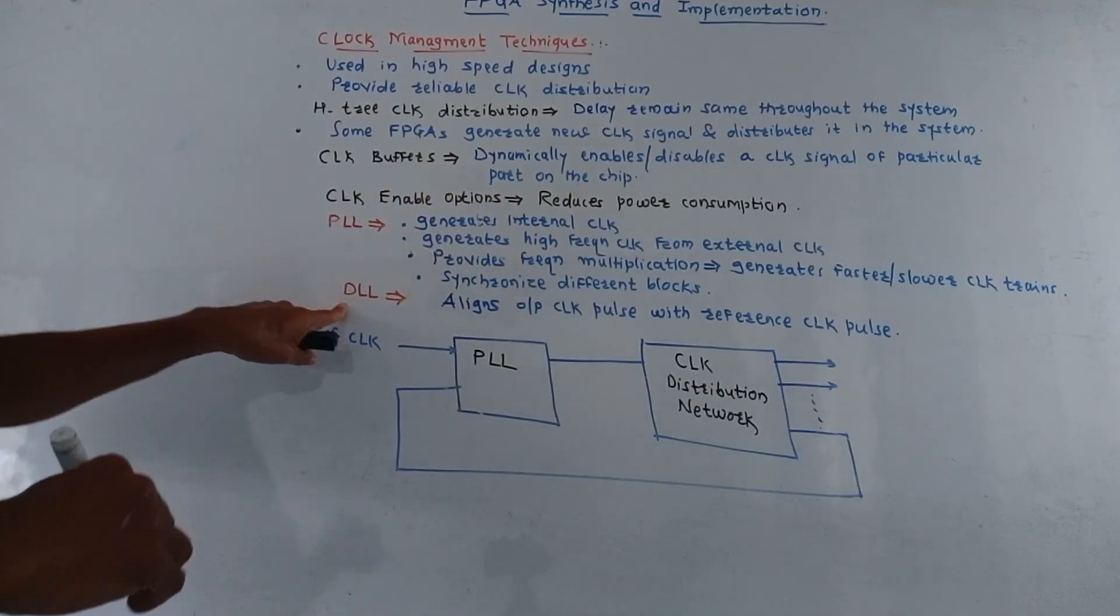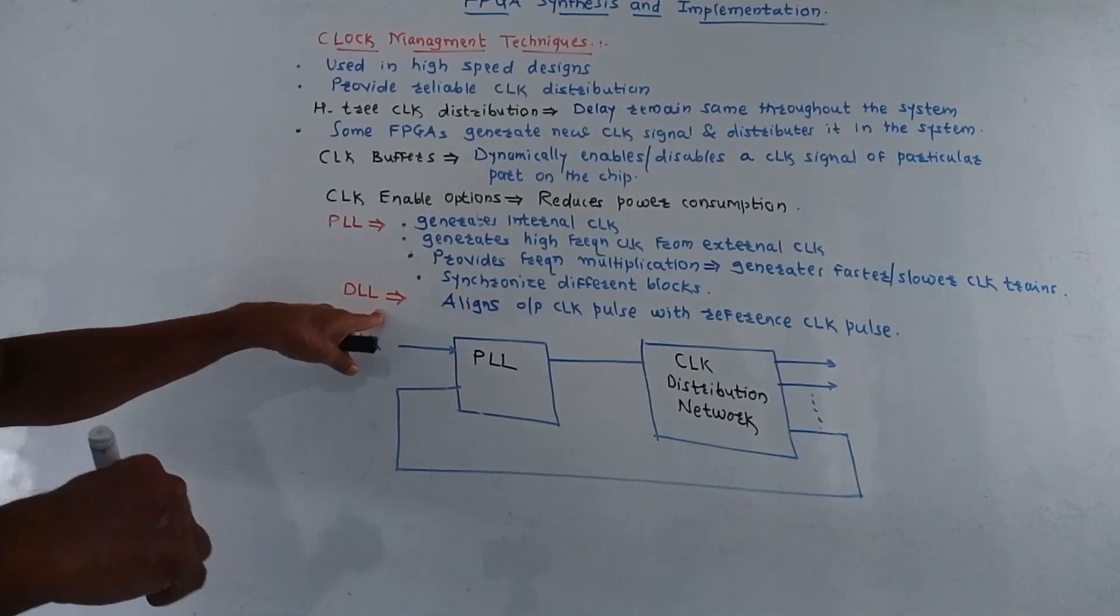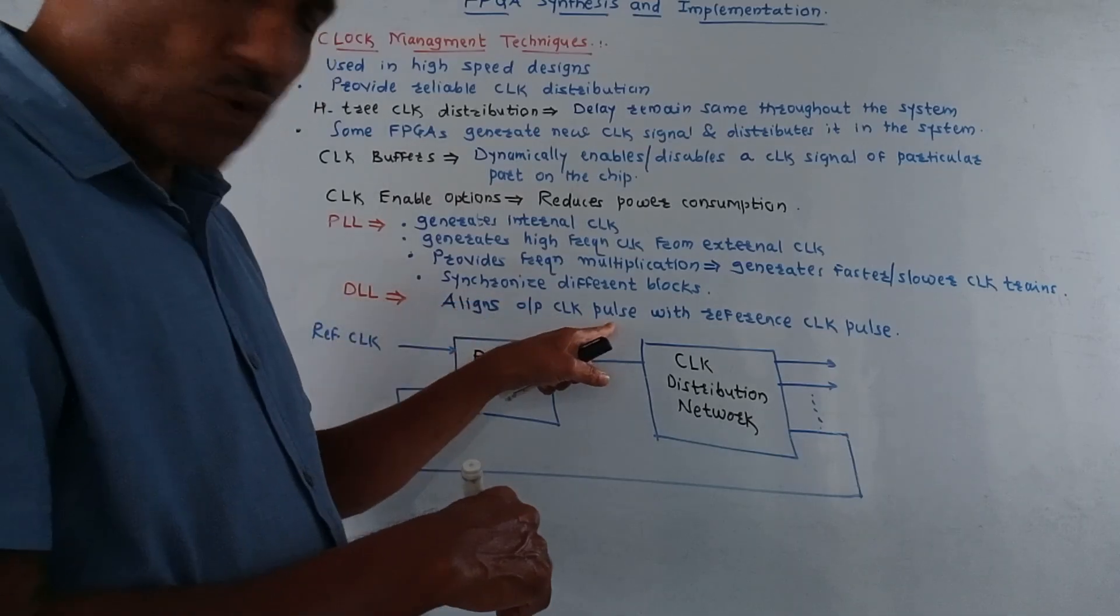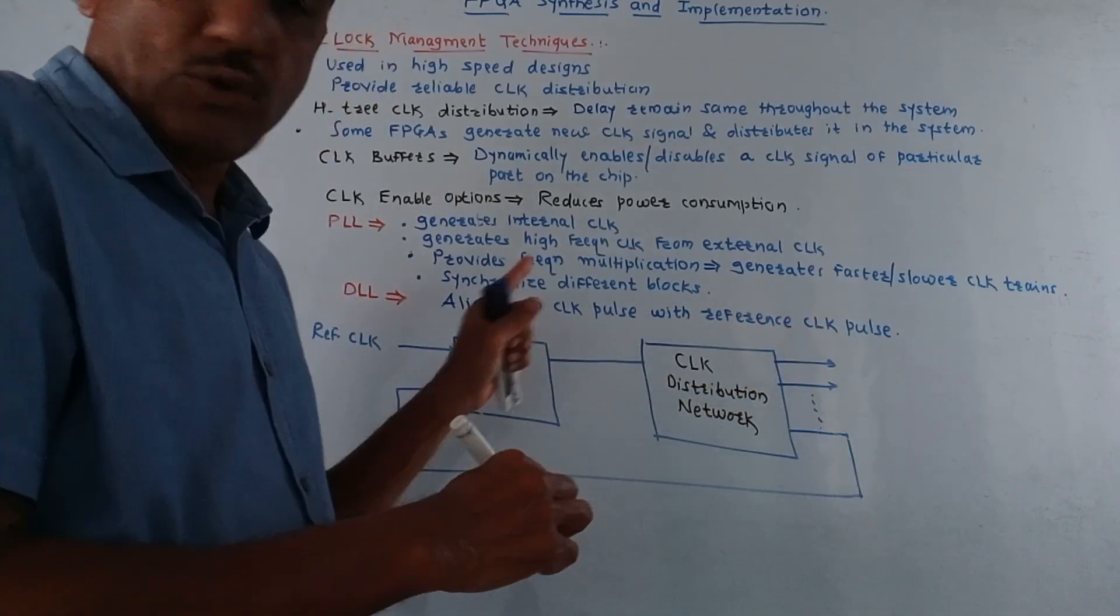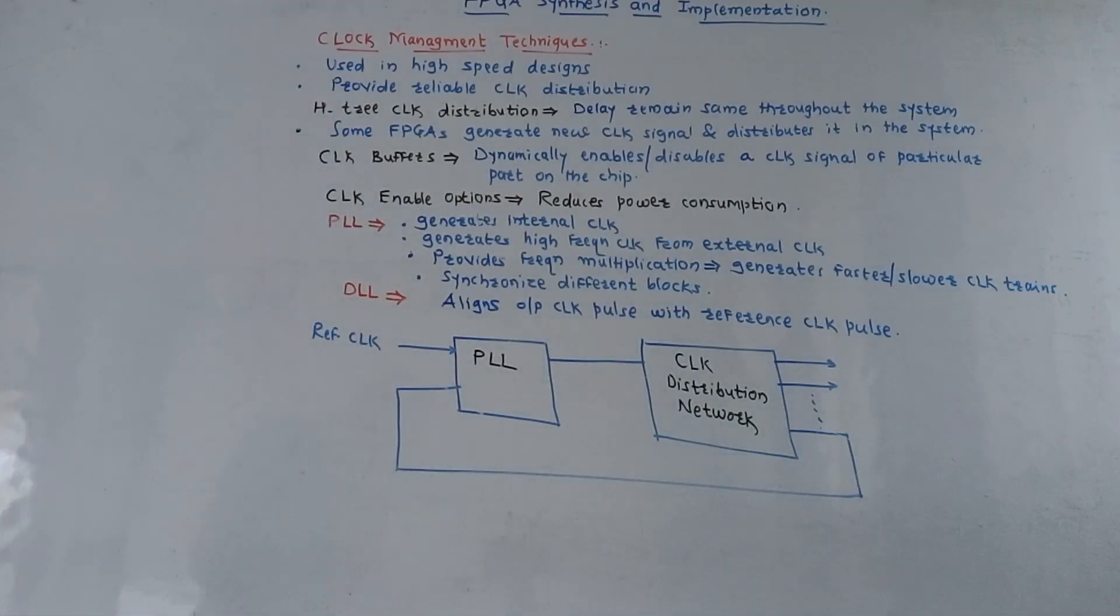Similar to PLL we have DLL that is delay locked or delay locked loop. So it aligns the output clock pulse with the reference clock pulse. So this is about the clock management techniques used in FPGA.